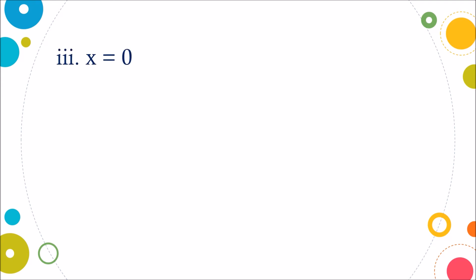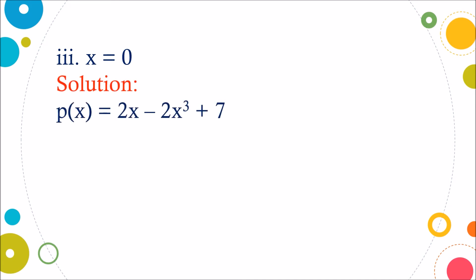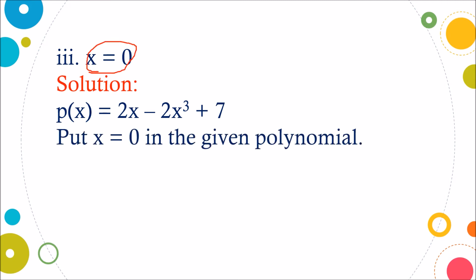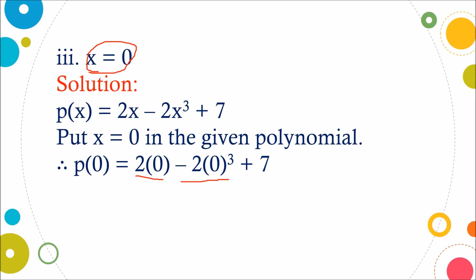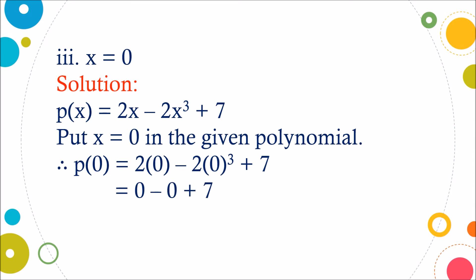Now the value of x is 0. We will find the value of the same polynomial when x is 0. Substituting x as 0: p(0) = 2 into 0 minus 2 into 0 raised to 3 plus 7. We get 0 minus 0 plus 7. Since 2 into 0 is 0 and 0 raised to 3 is 0, we get 0 minus 0 plus 7, which equals 7. So the value of this polynomial is 7 when x is 0.